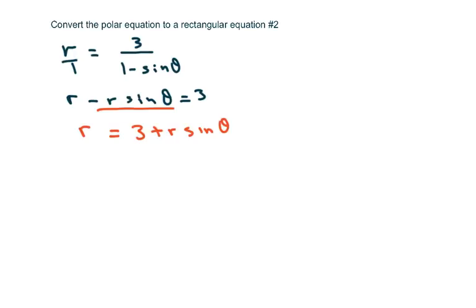And now I'm going to square both sides. So when you remember that r squared equals x squared plus y squared, remember that y equals r sine of theta.